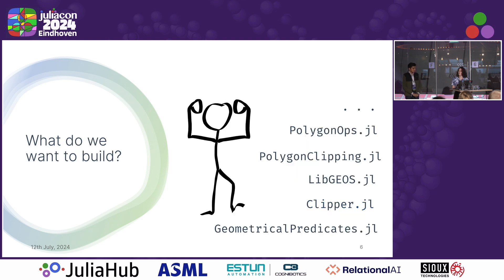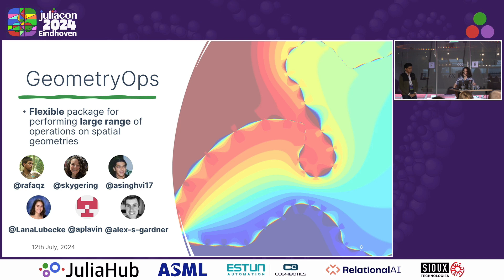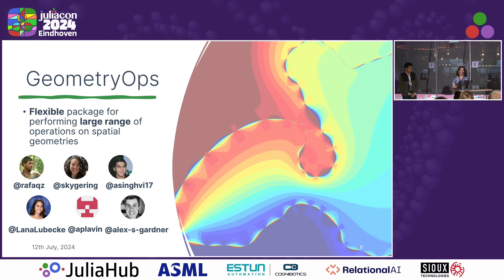What do we really want? We want to build on the strength of these existing packages, use the manpower of people in the Julia community who are already working on these things, and build one package with enough methods and interoperability to build a real community of users and developers for the good of the ecosystem. We're really hoping that will be GeometryOps, and this is our group of people who have worked on the package so far.